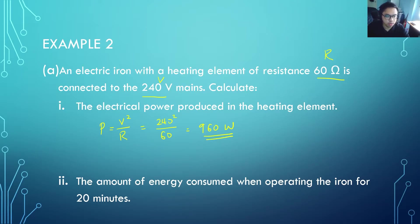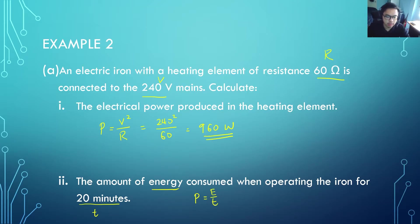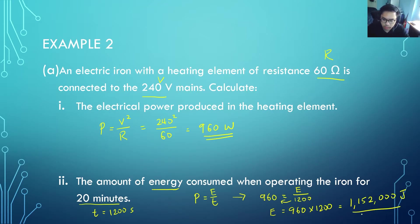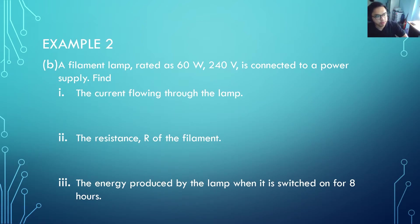Example 2b: Calculate the amount of energy consumed when operating the iron for 20 minutes. Since we already have power and time, we use P equals E over T. Power is 960 watts, energy is unknown, and time is 20 minutes which must be converted to seconds: 20 minutes equals 1200 seconds. Rearranging gives E equals 960 times 1200, which equals 1,152,000 joules.